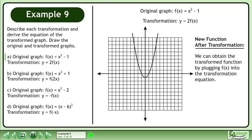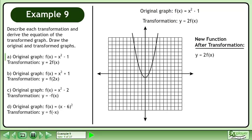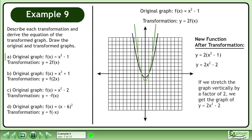We can obtain the transformed function by plugging f of x into the transformation equation. Bring down the transformation equation, then replace f of x with x squared minus 1. Simplify by multiplying 2 through the brackets. If we stretch the graph vertically by a factor of 2, we get the graph of y equals 2x squared minus 2.